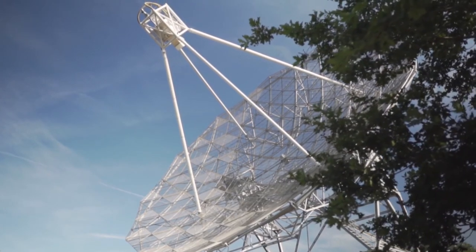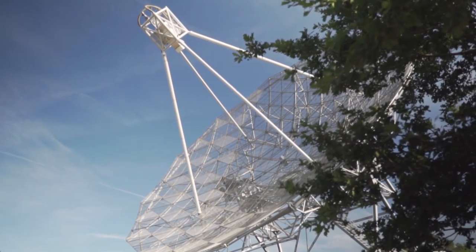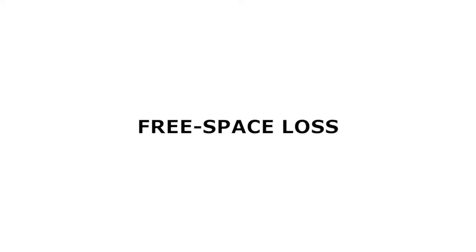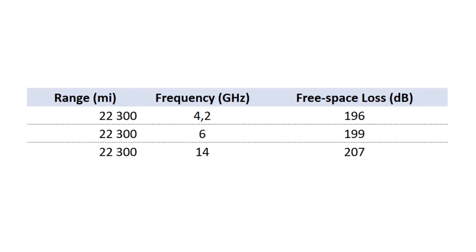There are far greater losses than for LOS microwave. We encounter free space losses possibly as high as 145 decibels for LOS. In the case of a satellite with a range of 22,300 miles operating on 4.2 gigahertz, the free space loss is 196 decibels; at 6 gigahertz, 199 decibels; and at 14 gigahertz, the loss is about 207 decibels.